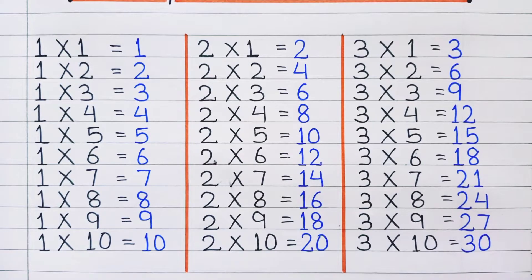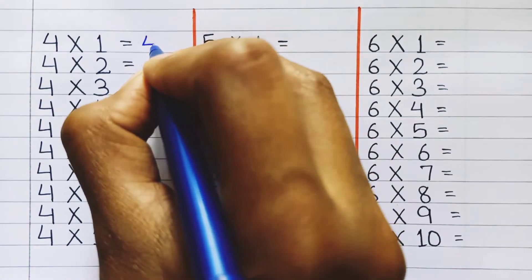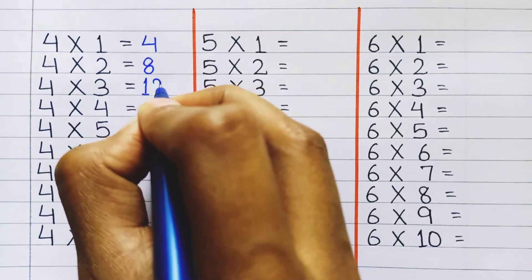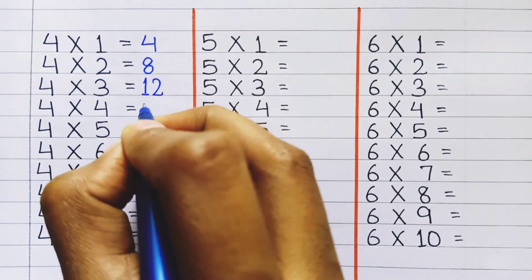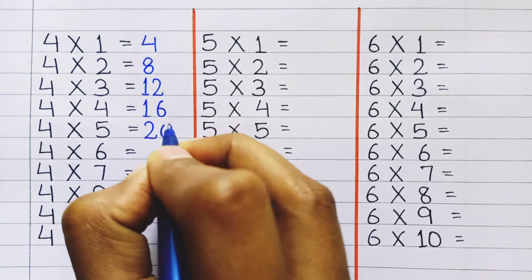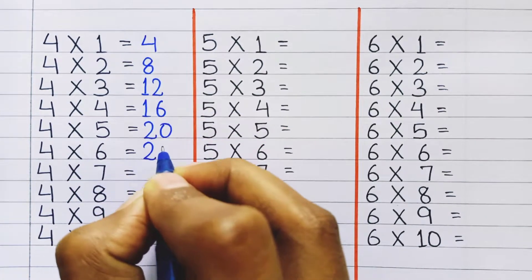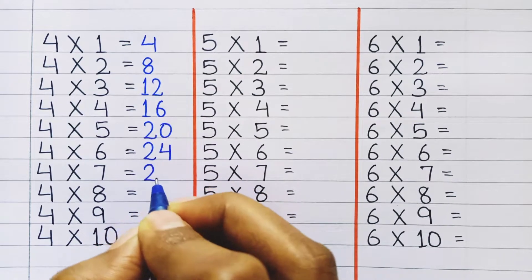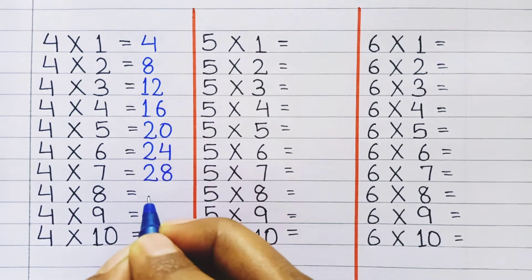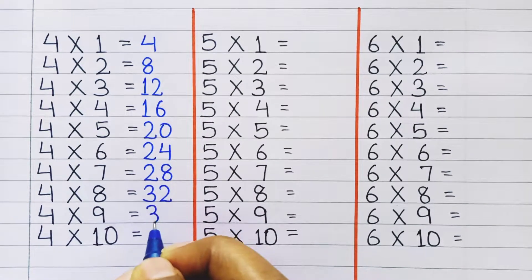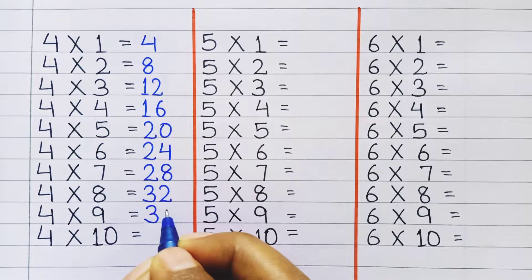Table of 4: 4 one's a 4, 4 two's a 8, 4 three's a 12, 4 four's a 16, 4 five's a 20, 4 six's a 24, 4 seven's a 28, 4 eight's a 32, 4 nine's a 36.